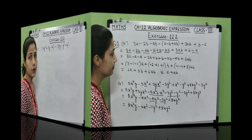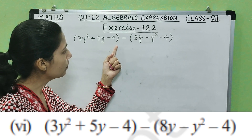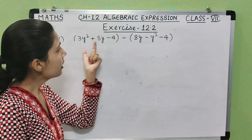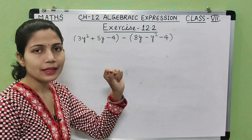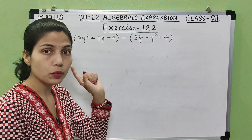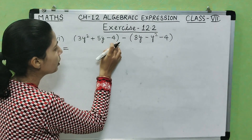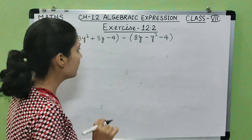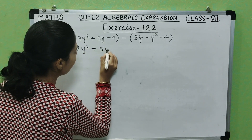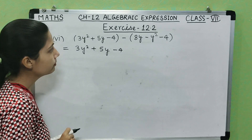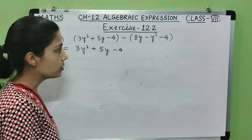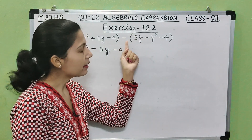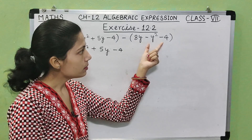Now come to the sixth part: in bracket 3y square plus 5y minus 4, bracket close, minus in bracket 8y minus y square minus 4, bracket close. So this question has terms with brackets. The first work is to remove the brackets. If we remove the first bracket, since it has a plus sign before it — no change in terms, so 3y square plus 5y minus 4. But the second bracket has a minus sign before it, so we multiply minus into each term inside.